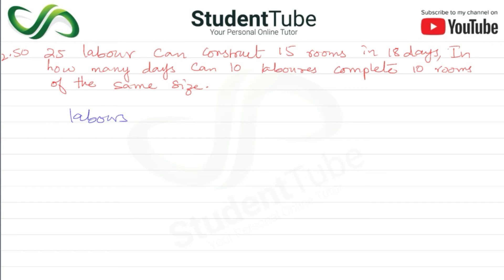First we set up the table. Columns will be: laborers, then rooms, and then days. So 25 laborers, 15 rooms — how many days do they build? We need to find the days.